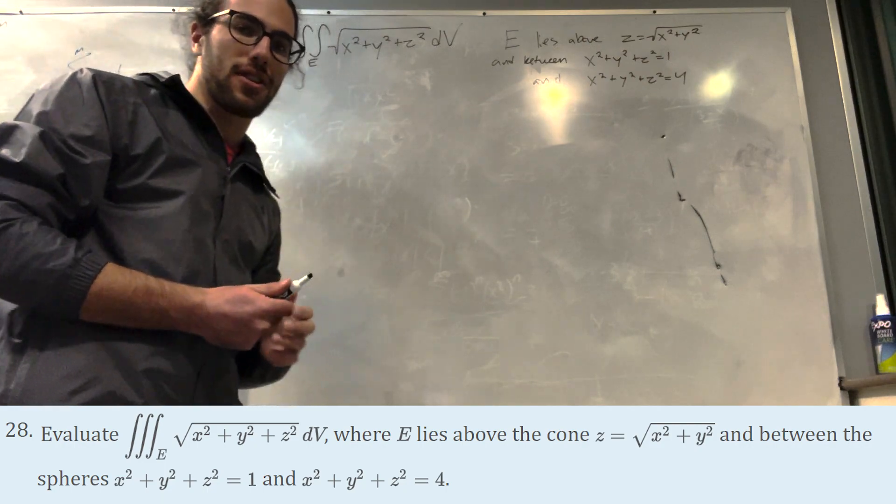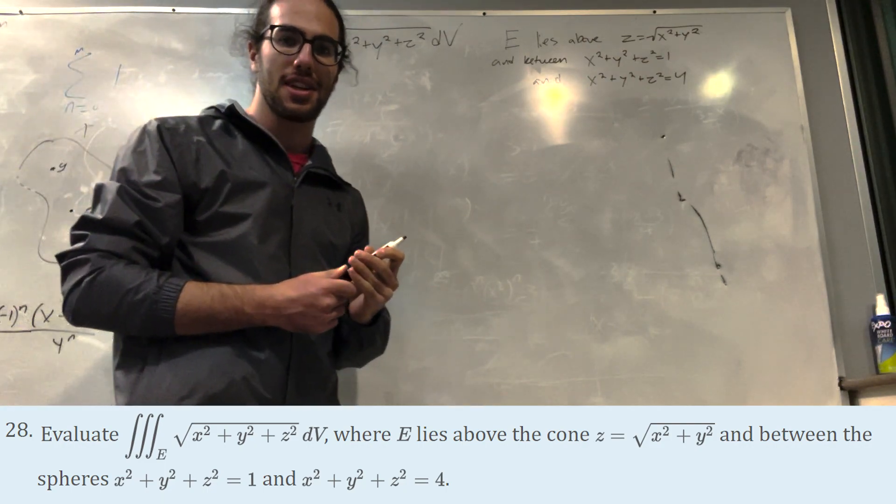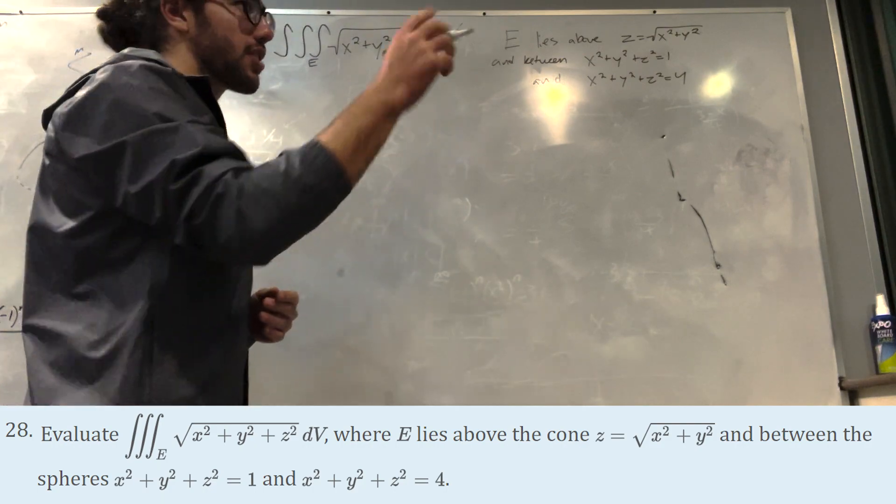So we're going to be using spherical coordinates for this, which means we're going to need our terms in rho and phi. So how do we get this? Well, let's write out what we know.